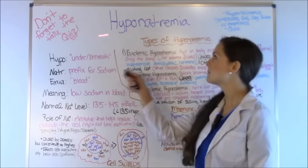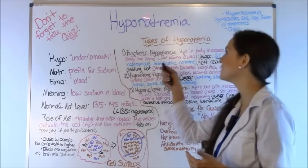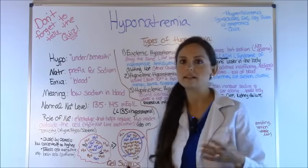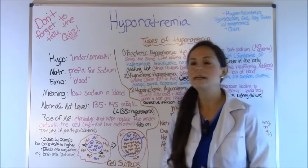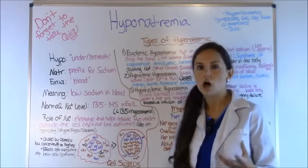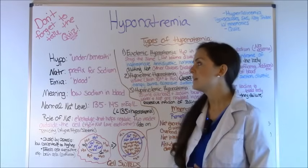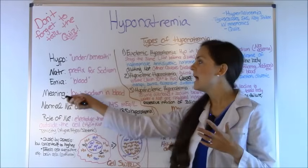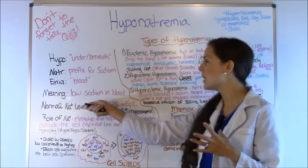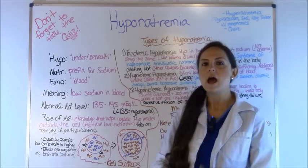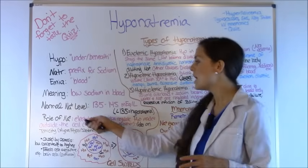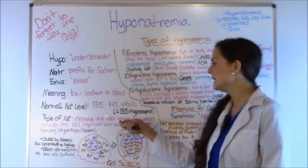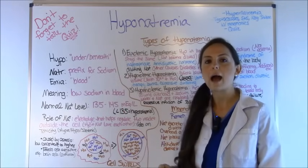Let's get started. Let's talk about hyponatremia. Anytime I have one of these huge words, I like to break them down to know what type of electrolyte I'm dealing with. The first part of the word is hypo — what does hypo mean? It means underneath, beneath, low. The natremia part — N-A-T-R — is a prefix for sodium, and emia means blood. So when you put that together, you get low sodium in the blood. A normal sodium level is 135 to 145 milliequivalents per liter. Anything less than 135 is considered hyponatremic.